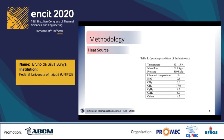In the Organic Rankine Cycle technology, the main constraint is the heat source. The first stage of the thermodynamic model development is focused on characterization of the heat source according to its chemical composition, temperature, and molar flow. Looking at Table 1, you can see the main characteristics of the natural gas compression units of the FPSO, which is the heat source used for this study.